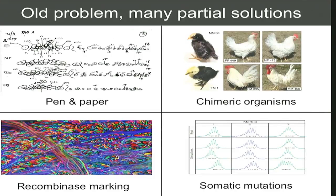If you have as few as four cells, there are actually 15 different cell lineage histories. If you double that to eight, there are 135,000 different cell histories, and go up to 16 and it soon approaches Avogadro's number. Within a clone there's a tremendous amount of precise lineage information that can't be resolved. So what one needs is a virtually limitless supply of markers.